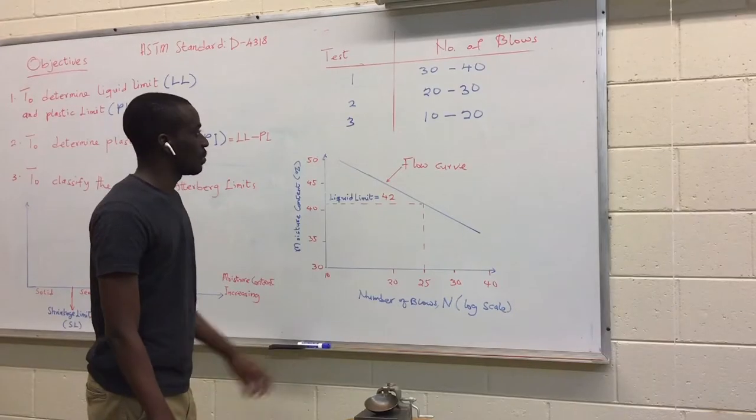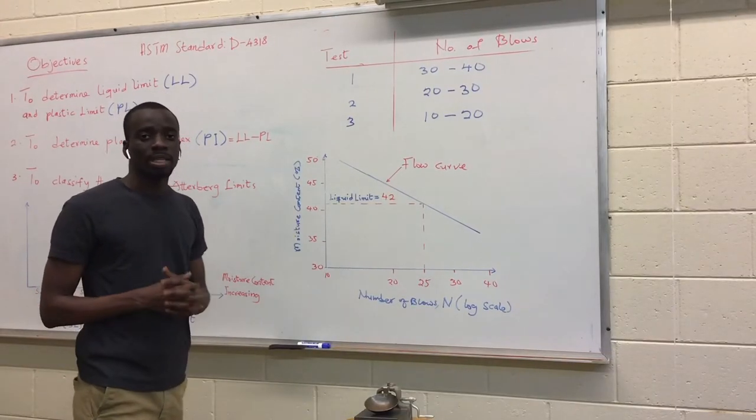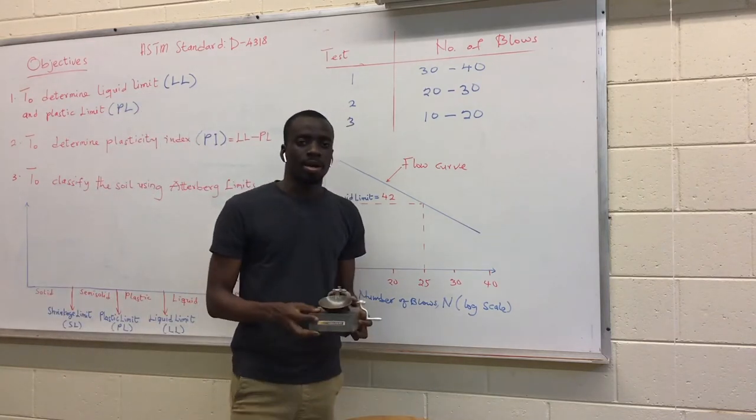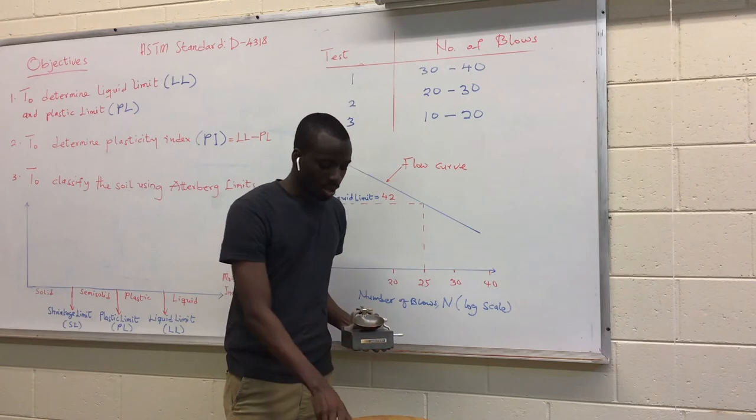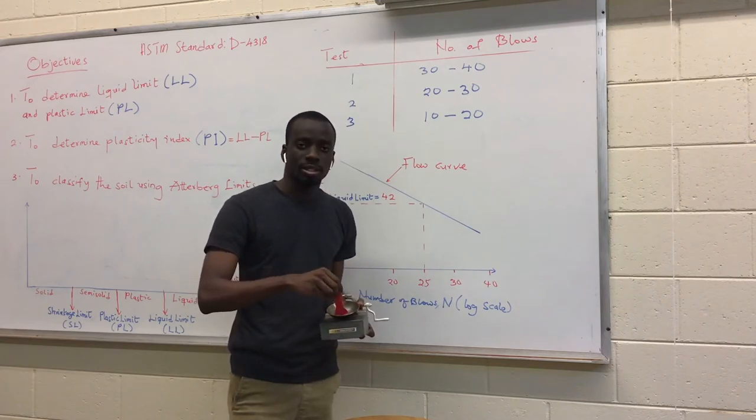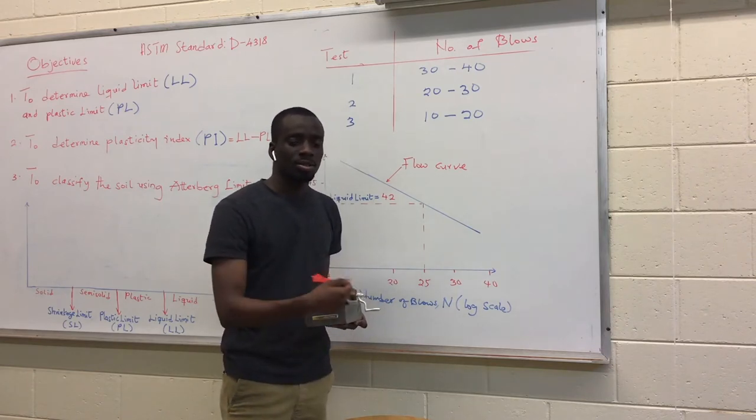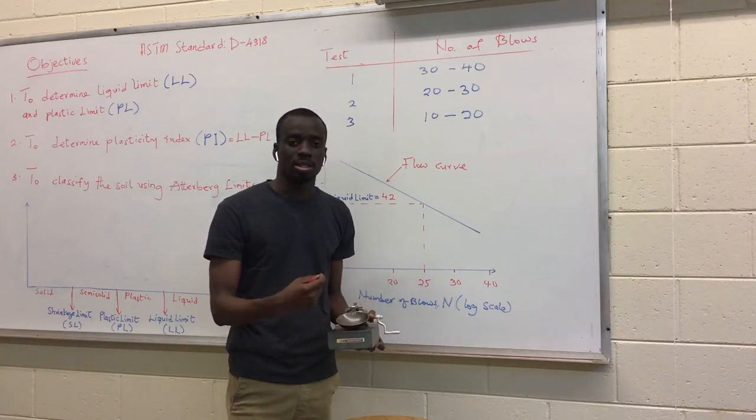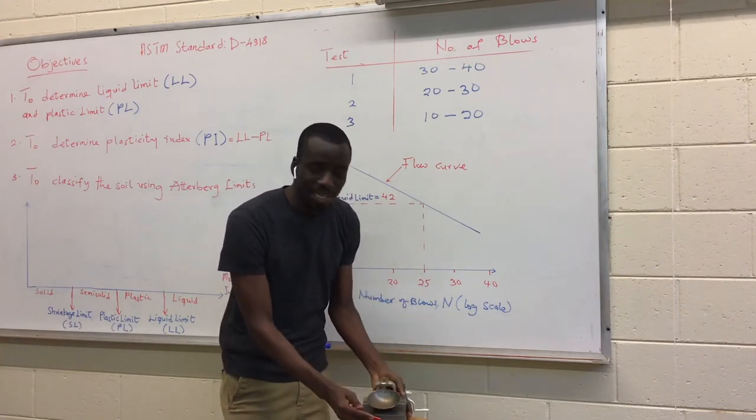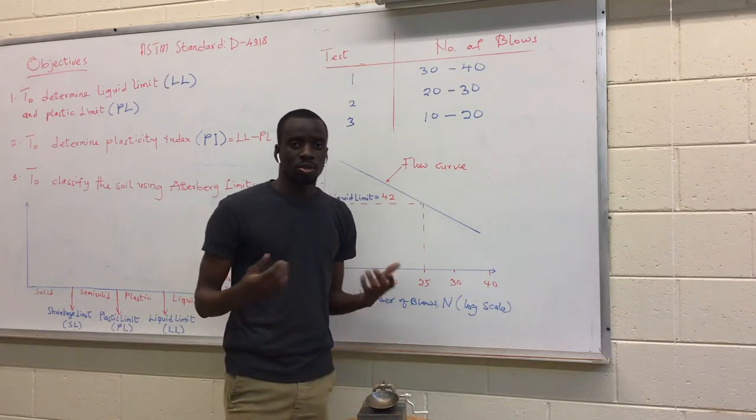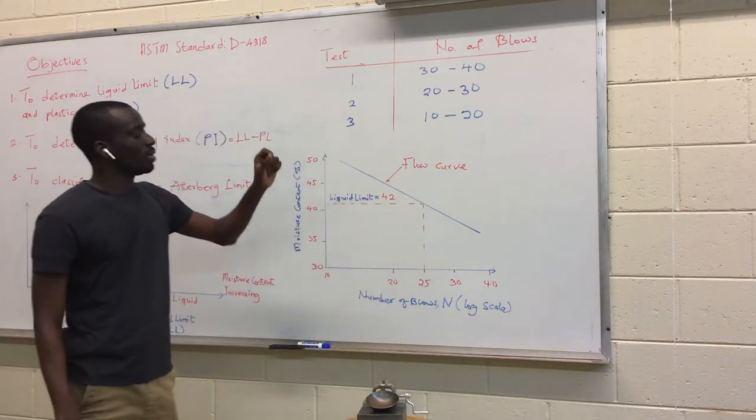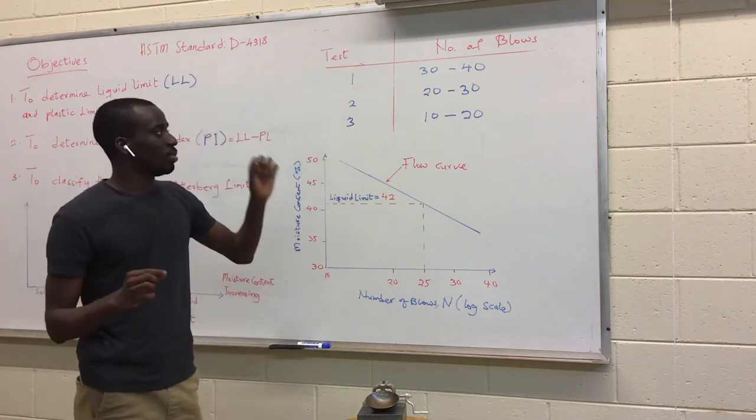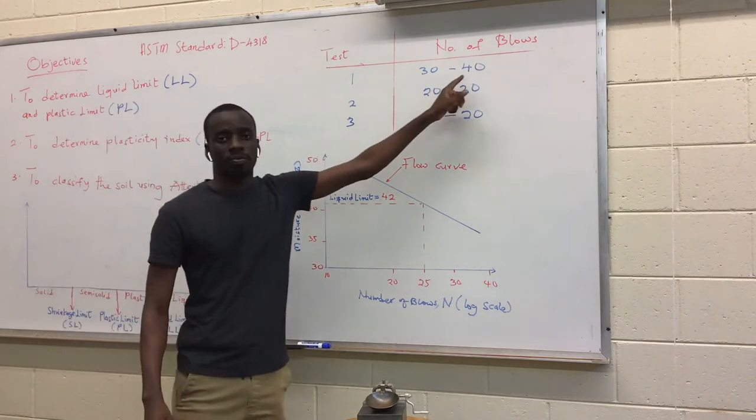The first test that we do here is the liquid limit. For that, we are going to fill the Casagrande apparatus with the soil and cut a groove through it. We are going to crank this two revolutions per second and see how the groove closes. It has to close with a length of 13 millimeters. The first test, we are going to make sure that the groove closes between the blows of 30 and 40.